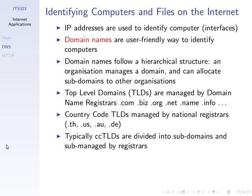IP addresses identify computer interfaces. Domain names are a user-friendly way to identify computers. You know their hierarchical structure: top-level domains, country code top-level domains like .co.th and .ac.th. Those domain names map to specific IP addresses. The protocols use IP addresses to communicate, but humans enter domain names — so we need some mechanism so that when you type a domain name, your computer knows the corresponding IP address. That's what DNS does.